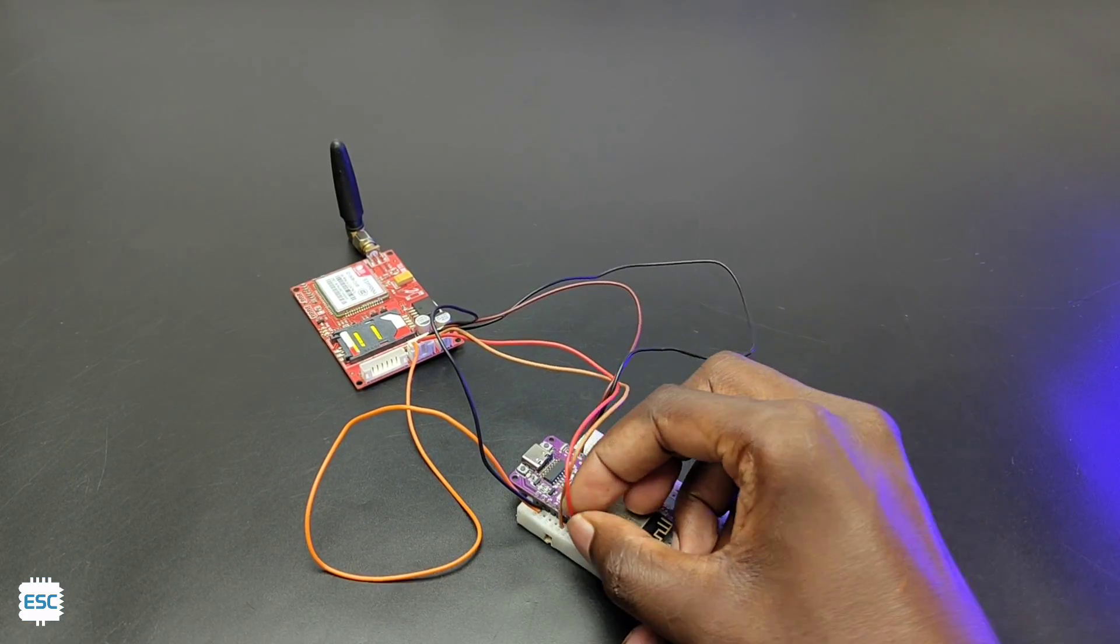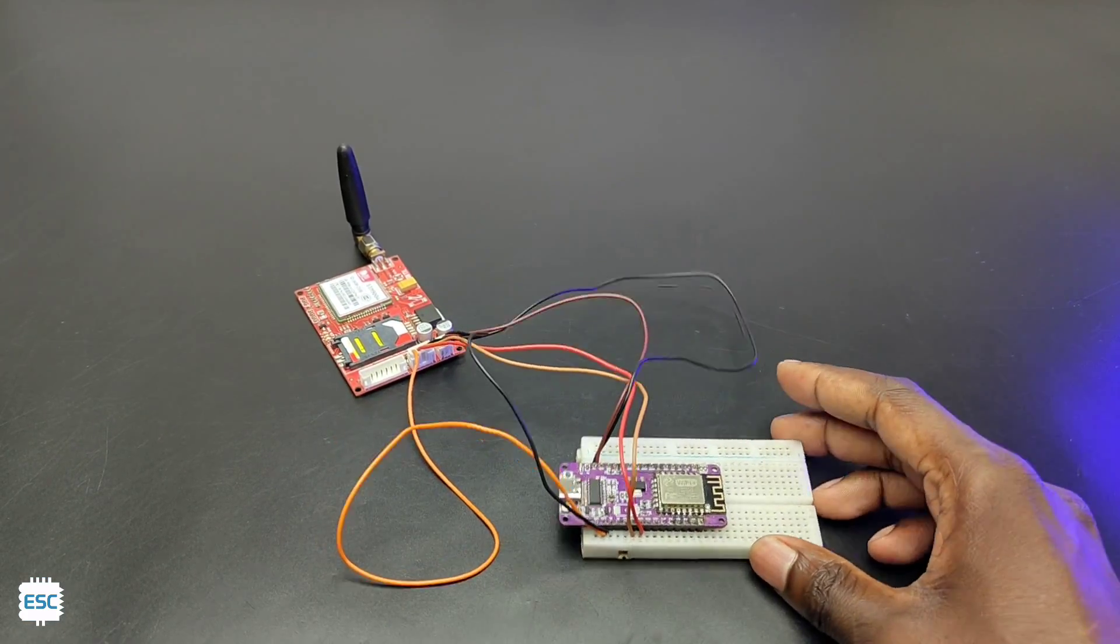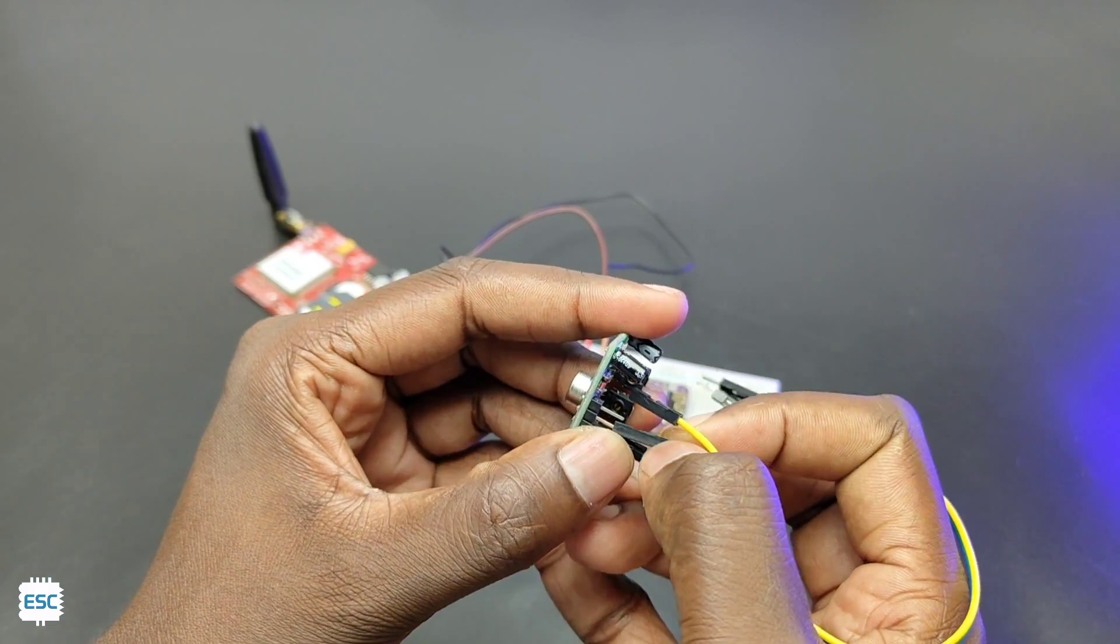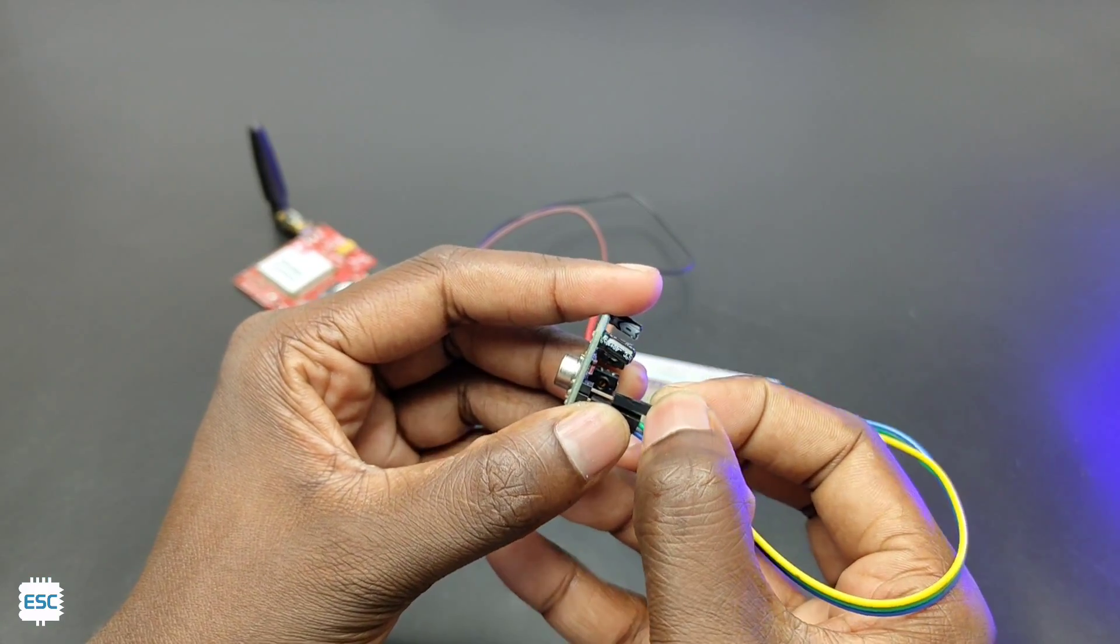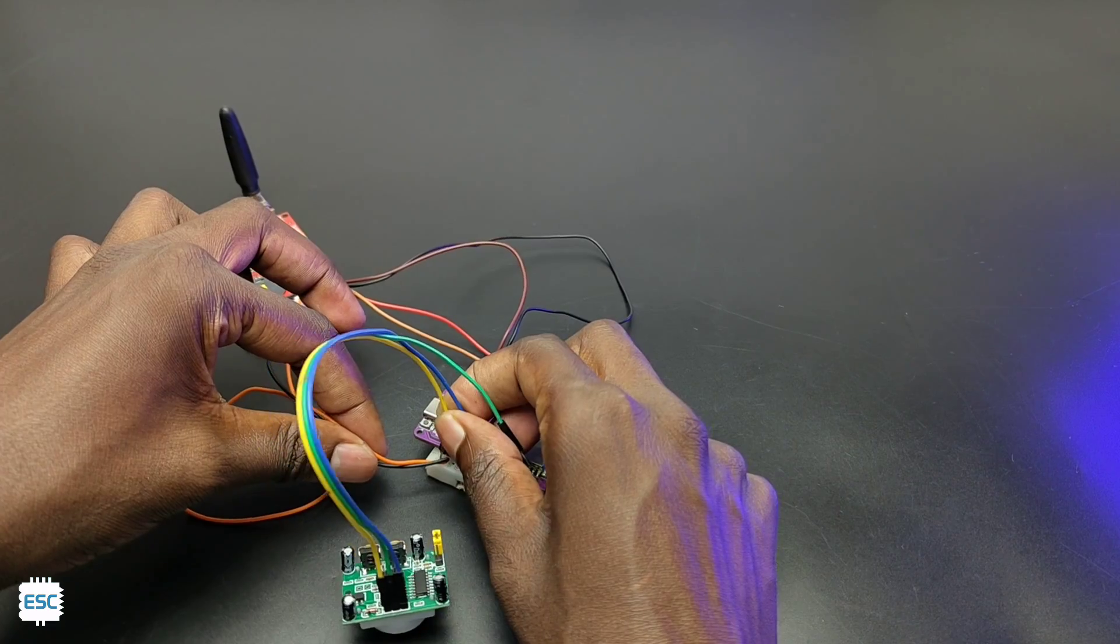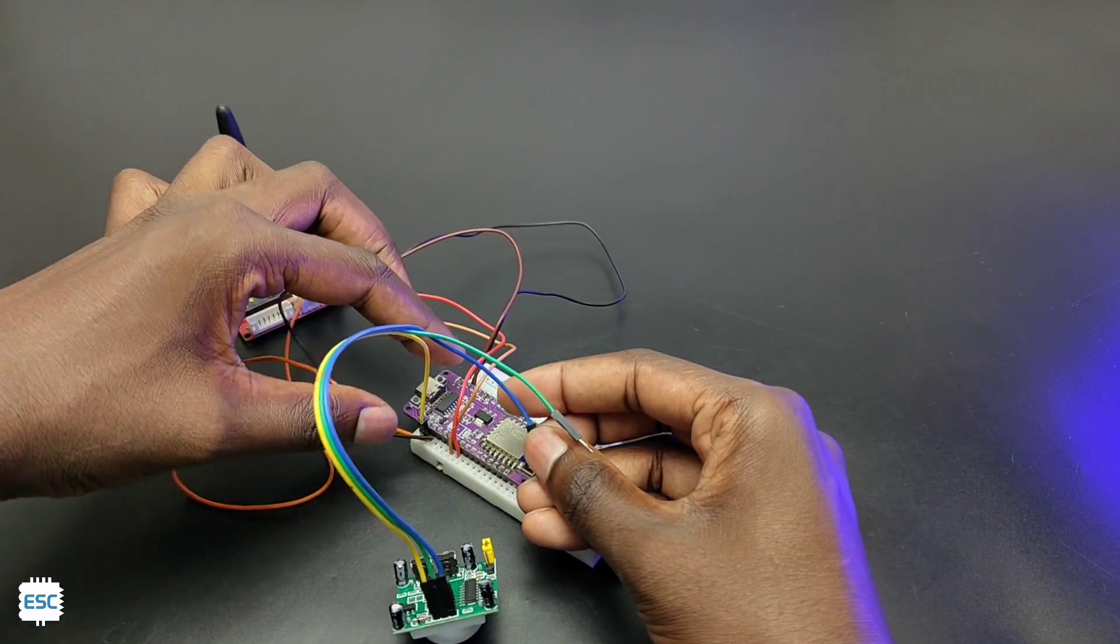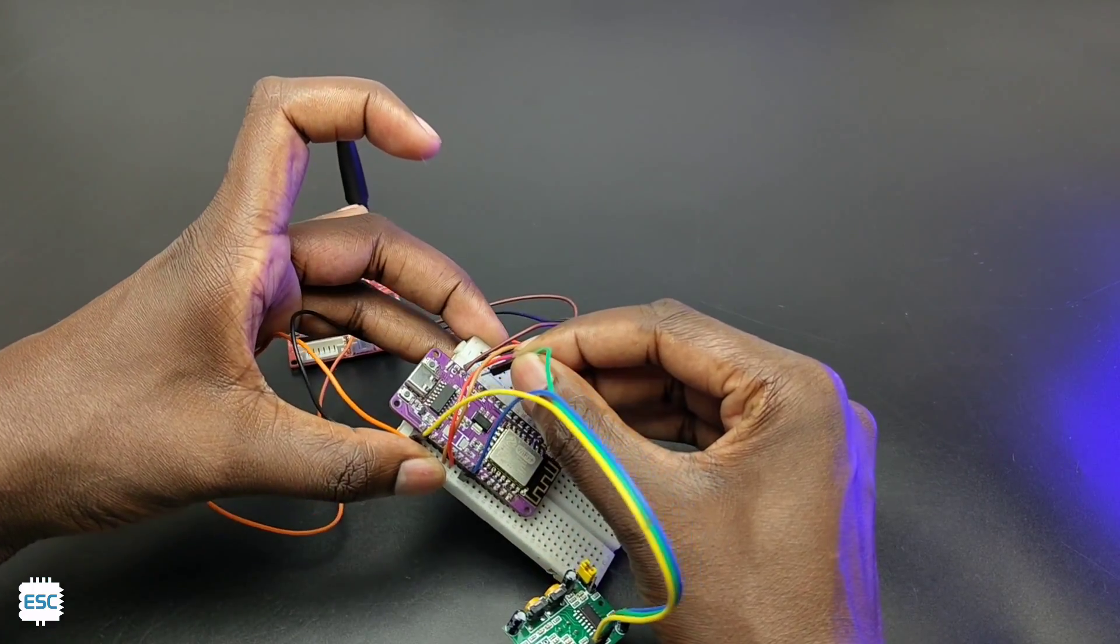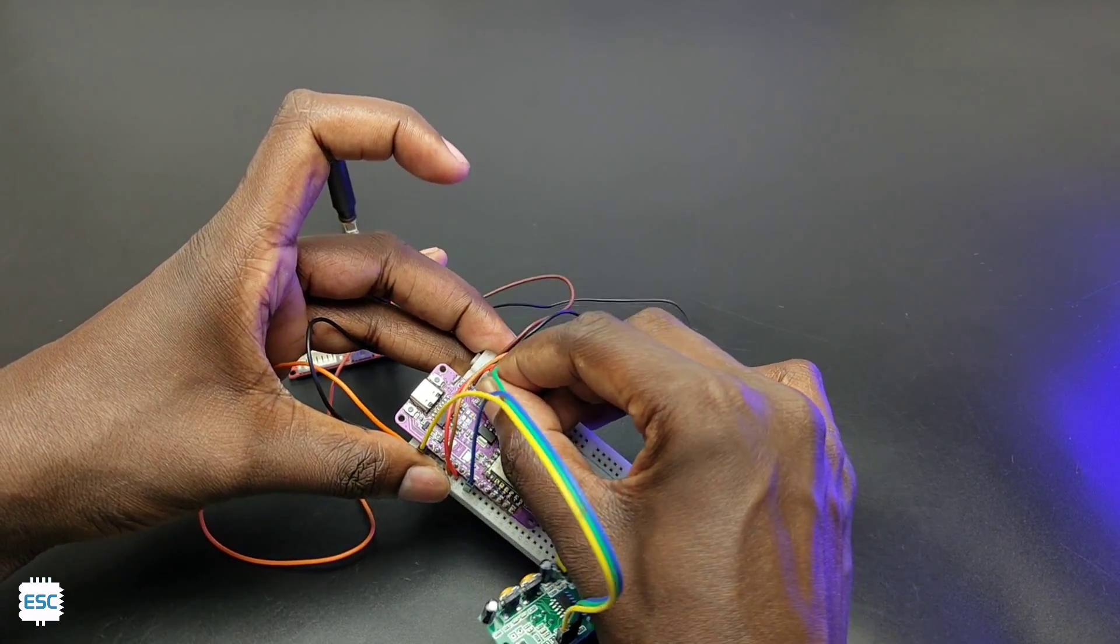TX to GPIO12 and RX to GPIO13 of NodeMCU. Now let's connect the PIR sensor, this sensor has three pins: VCC, ground and output. So connect VCC to VIN pin of NodeMCU, ground to ground of NodeMCU. And finally connect the output pin to reset pin of NodeMCU.